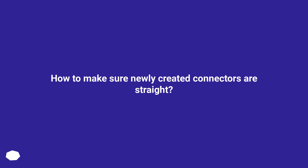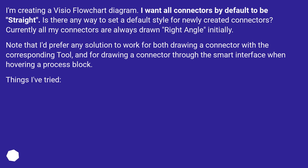How to make sure newly created connectors are straight. I'm creating a Visio flowchart diagram and I want all connectors by default to be straight. Is there any way to set a default style for newly created connectors? I'd prefer any solution to work for both drawing a connector with the corresponding tool, and for drawing a connector through the smart interface when hovering a process block.